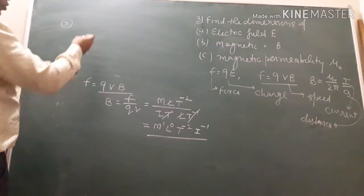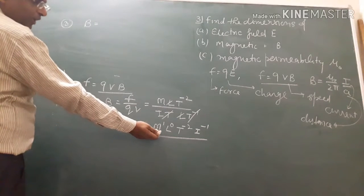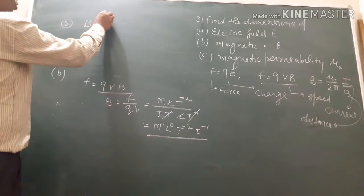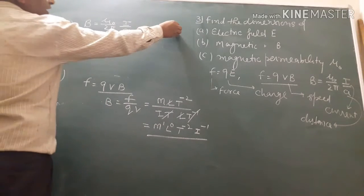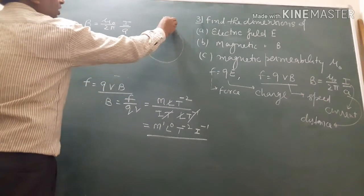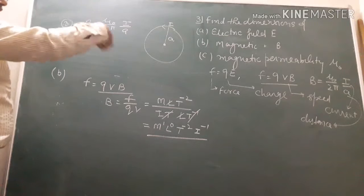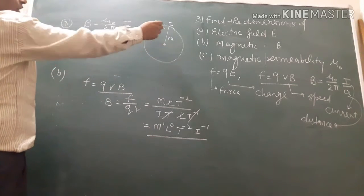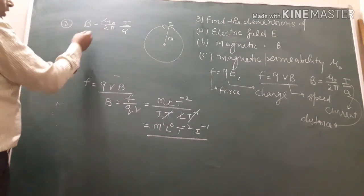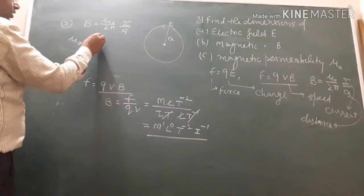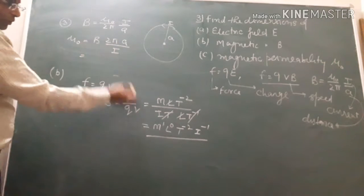Next, part C: magnetic permeability mu naught. The formula for B is also mu naught upon 2 pi times I upon A for a current-carrying wire with current I flowing in a circular circle. So B equals mu naught I upon 2 pi A.